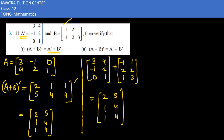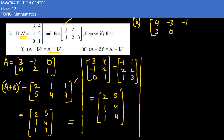Dekho dono se same answer aa raha hai — first part complete hota hai. Isi tarike se second part mein pehle A minus B karna hai: 3 minus minus 1 is 4, minus 1 minus 2 is minus 3, 0 minus 1 is minus 1, 4 minus 1 is 3, 2 minus 2 is 0, 1 minus 3 is minus 2. Yeh hua A minus B. Ab iska transpose: 4, minus 3, minus 1 in row 1 and 3, 0, minus 2 in row 2.